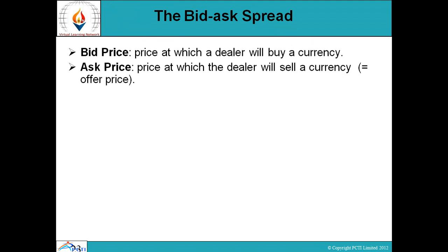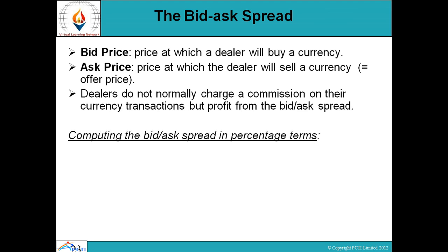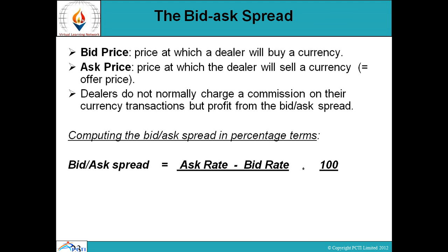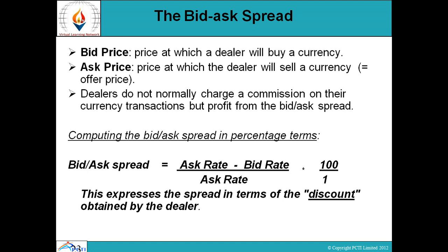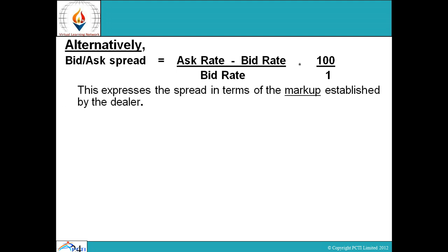Bid-ask spread: bid price is the price at which a dealer will buy a currency; ask price is the price at which the dealer will sell a currency, also called offer price. Dealers do not normally charge a commission but profit from the bid-ask spread. Computing the bid-ask spread in percentage terms: bid-ask spread equals (ask rate minus bid rate) divided by ask rate, multiplied by 100. Alternatively, bid spread equals (ask rate minus bid rate) divided by bid rate, multiplied by 100 — this expresses the spread in terms of the markup established by the dealer.